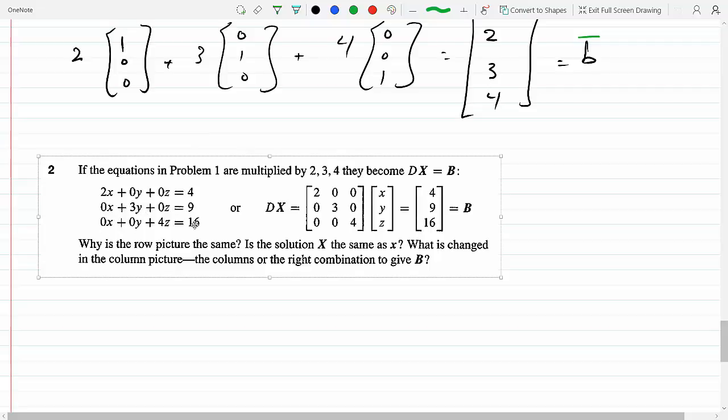Same thing for the second equation, same thing for the third. And it's saying why is the row picture the same?